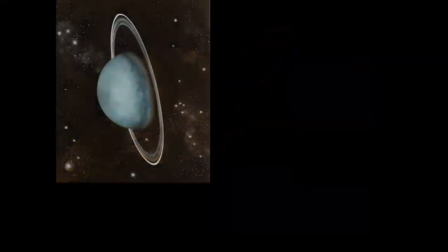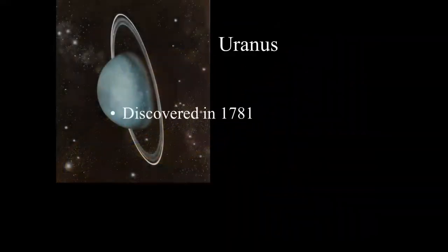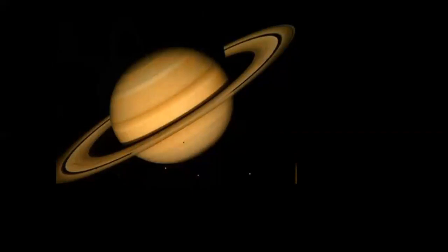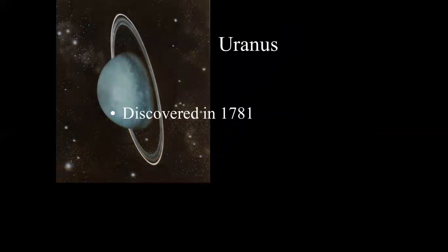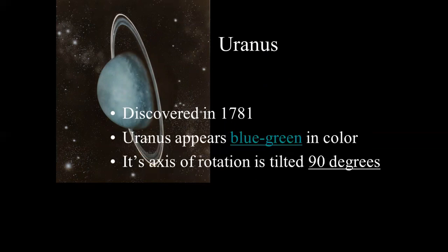The next planet is Saturn. Saturn has a ring system. It has multiple moons and no solid surface. Next to Saturn is Uranus. It was discovered in 1781. Uranus appears blue-green in color. Its axis of rotation is tilted 90 degrees, as you can see. Uranus and Neptune are the last planets. Their composition is rock, ice, liquid mixture, water, methane, and ammonia. This is why the last two planets are called ice giants.